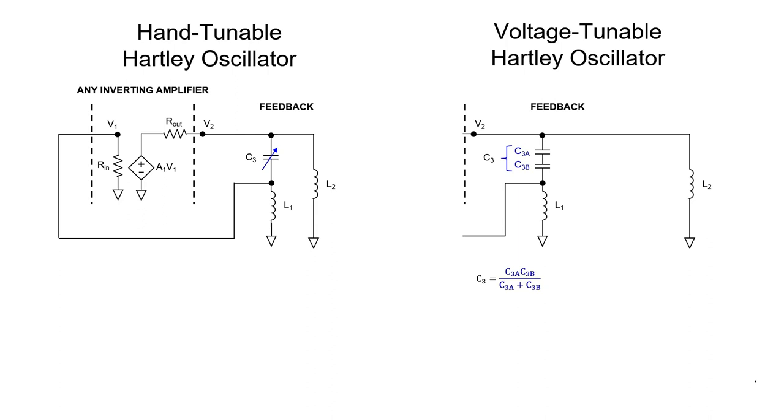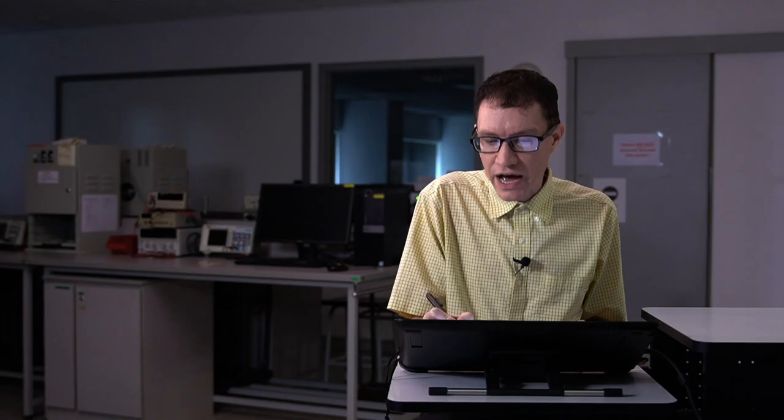First imagine that we take capacitor C3 and we split it into two larger capacitors, C3A and C3B. The reason why I said larger rather than smaller is because of the way capacitors in series add. We now might notice that this particular node is a ground for DC signals. I know it's a ground because it's connected to ground through inductor L1. Of course, inductor L1 is going to block very, very high frequency signals but it passes those very low frequency signals directly to ground.